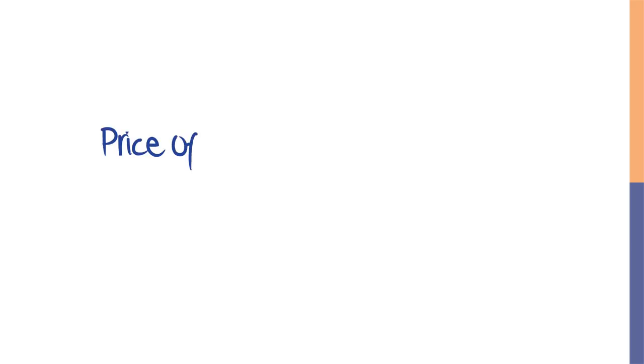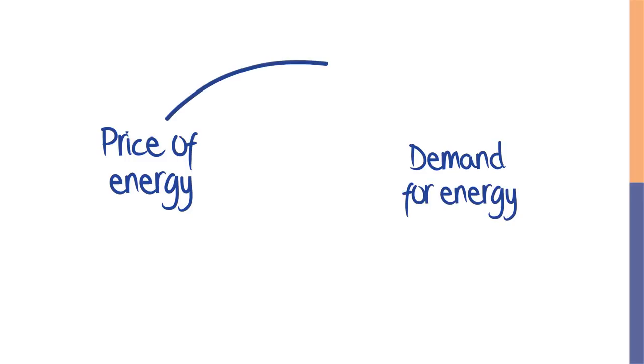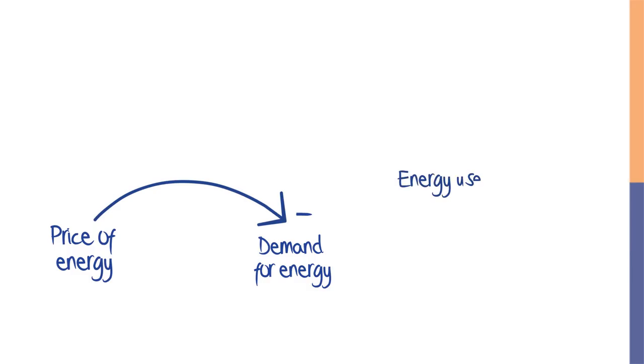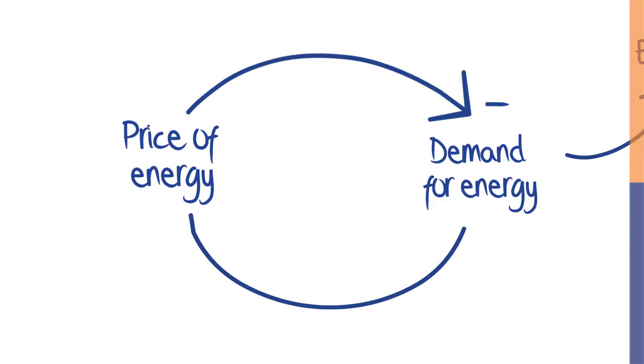Causal diagrams can be very simple, showing how just two elements of a system interact. Or they can be more complex, telling a more detailed story. They can even show how a change in the system can feed back on itself. In a complex interconnected world where your actions can ripple out to influence distant parts of a system, causal diagrams can help in three ways.